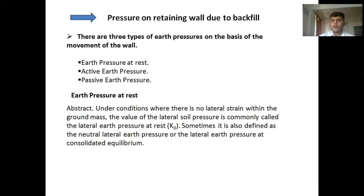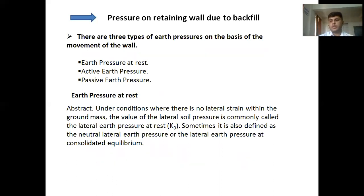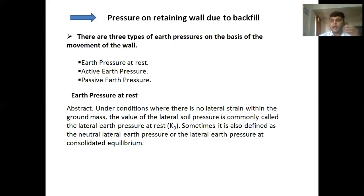There are three types of earth pressure based on the movement of the wall. First is earth pressure at rest. Second is active earth pressure. Third is passive earth pressure. Earth pressure at rest means when the wall does not move and the pressure acts on it.